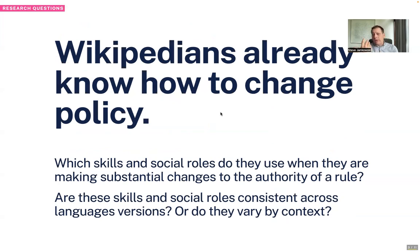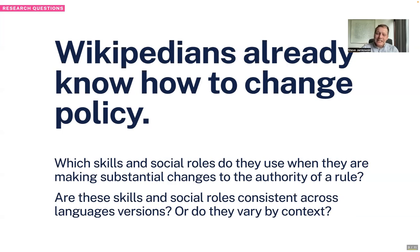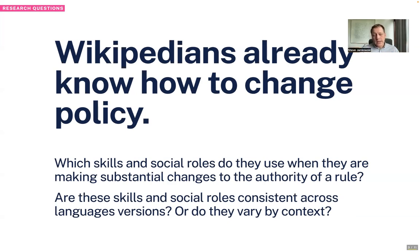Of course, Wikipedians already know how to change policy — they've been doing it for 20 years. So the questions we ask are: which skills and social roles do Wikipedians use when they are making substantial changes to the authority of a rule — you might also think of it in terms of the status of a rule. And are these skills and social roles consistent across language edition versions, or do they vary by context? We're very interested not just in Wikipedia's English policy environment, but its total policy environment and the interactions between different policy contexts.